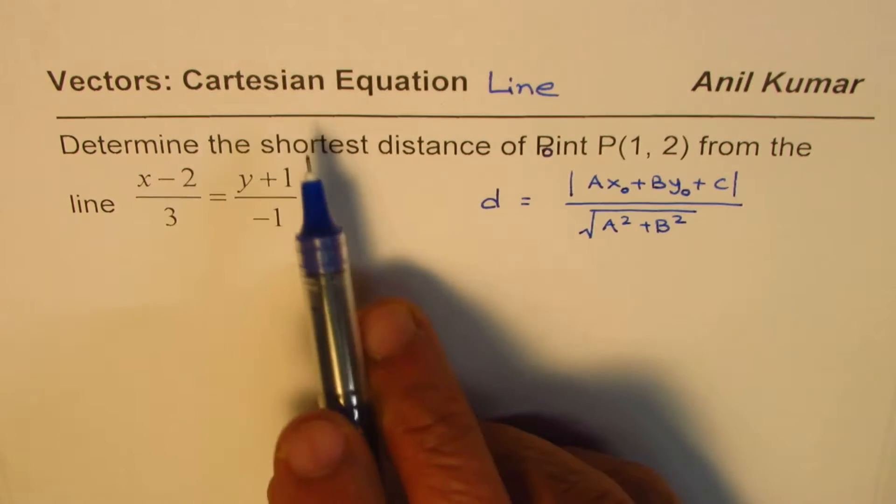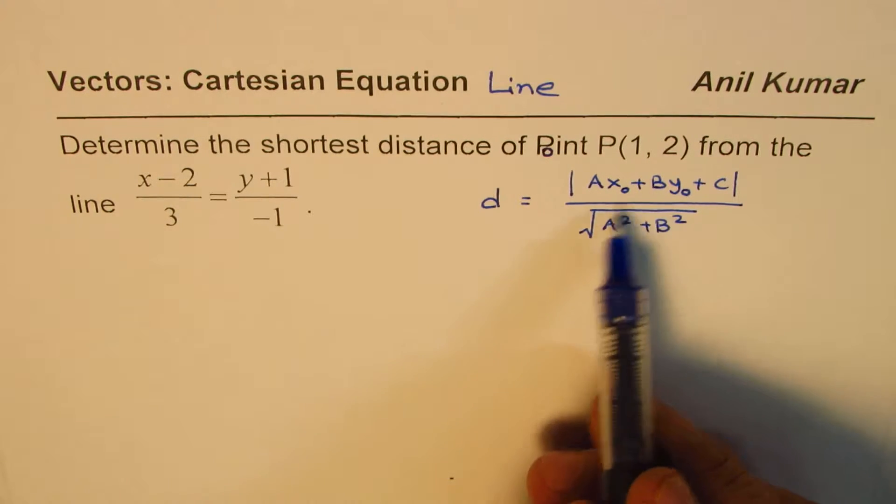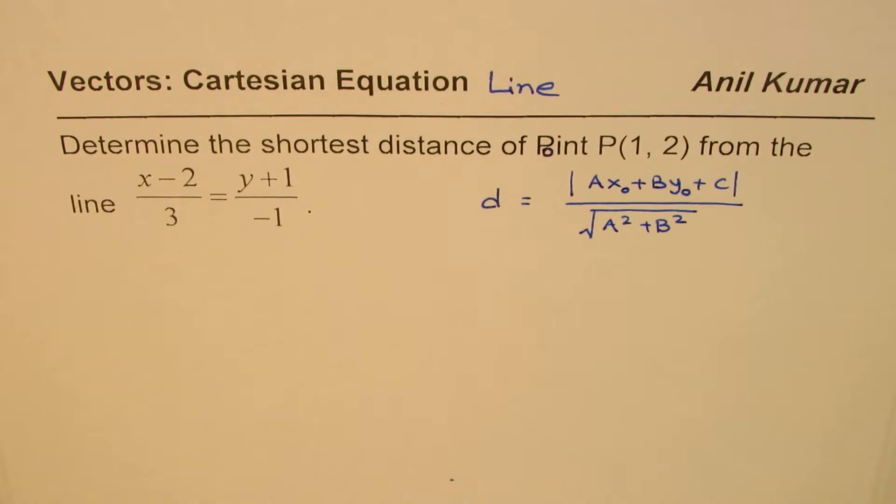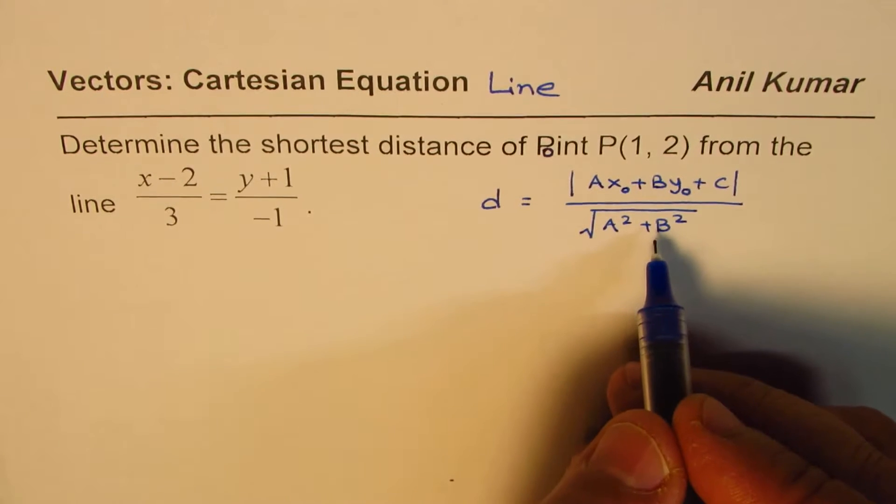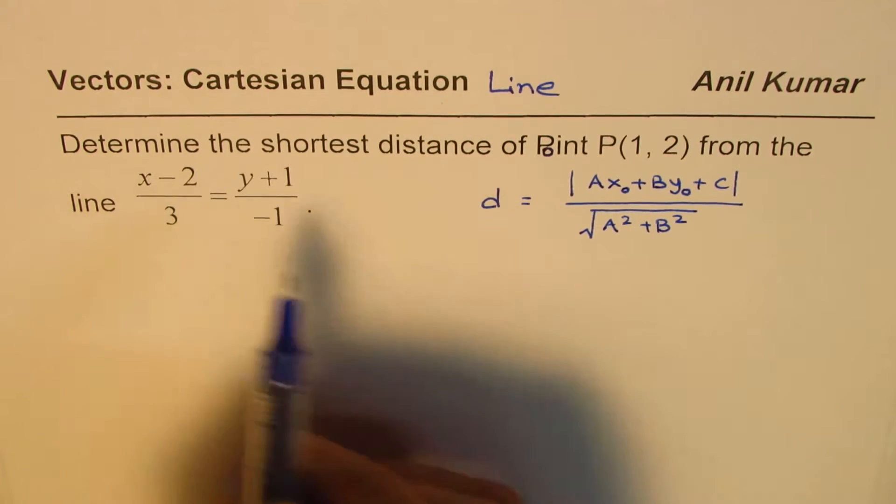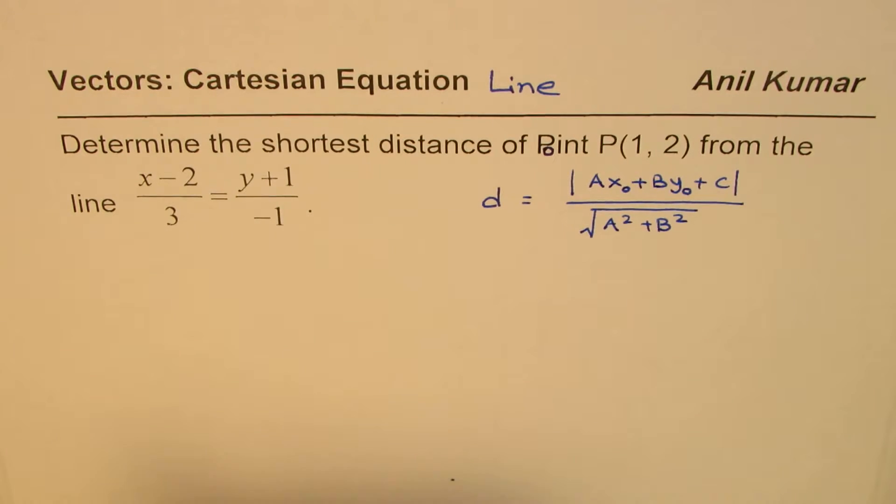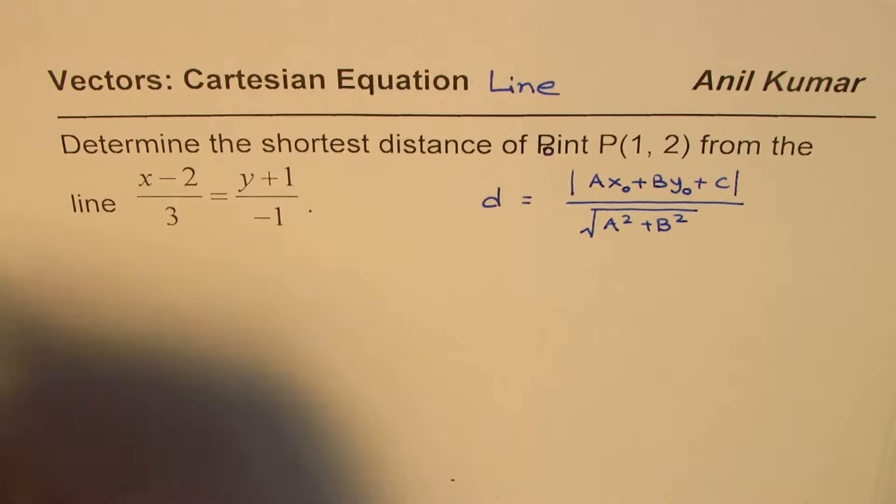And the reason is that Cartesian equation a and b values represent the normal. So normal is along the shortest distance. This is a good formula to always apply. My suggestion is, whenever you are given a line in any form, convert it to the Cartesian form and then find the shortest distance. That is the key strategy.